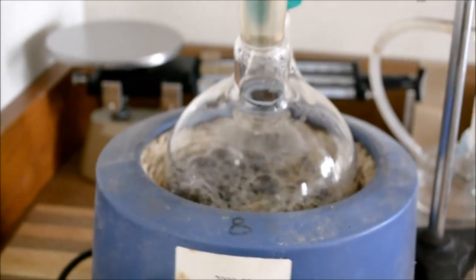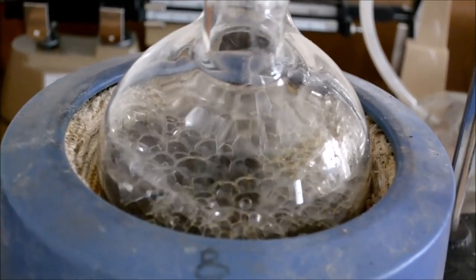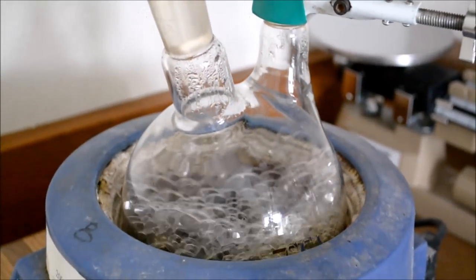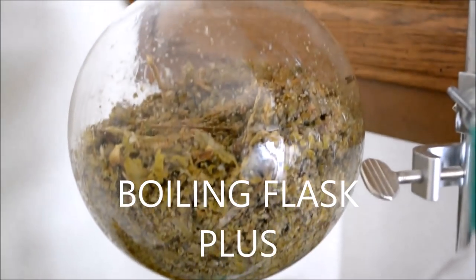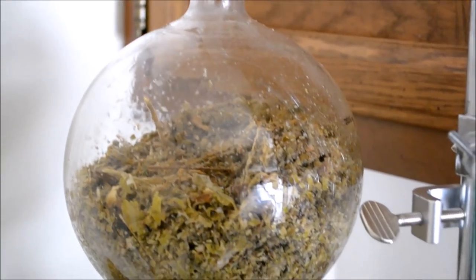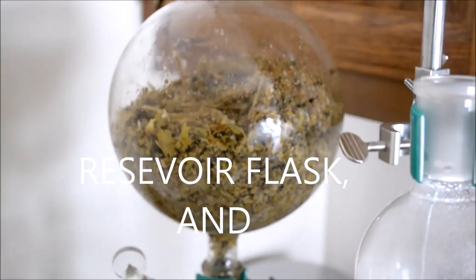Beyond that, you have the boiling flask. As we can see here, the water is boiling consistently, so that is the boiling flask. From the boiling flask you have the reservoir flask, and it's pretty self-explanatory. That's where your herb reserves are held so the steam can go through.